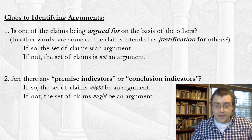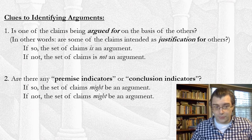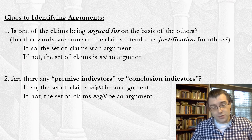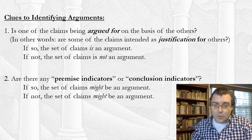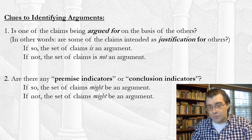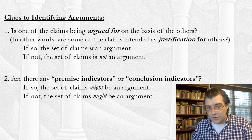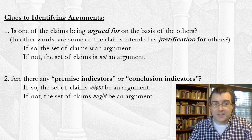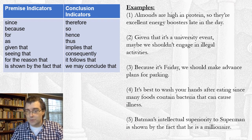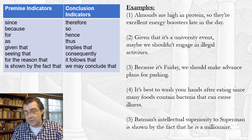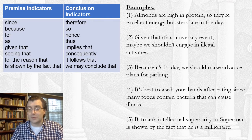Another clue you can use — not as foolproof as the first one, but useful sometimes — is whether or not there are things we call premise indicators or conclusion indicators in the passage. Here I have a list of words that often signal that what follows them is a premise in an argument. These are what we call premise indicators. I also have a list of words that often indicate that what follows them is a conclusion of an argument.